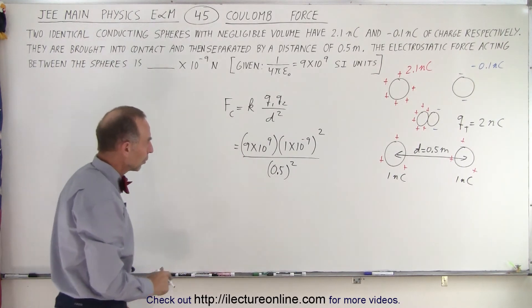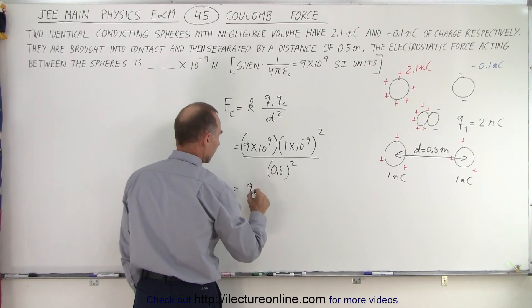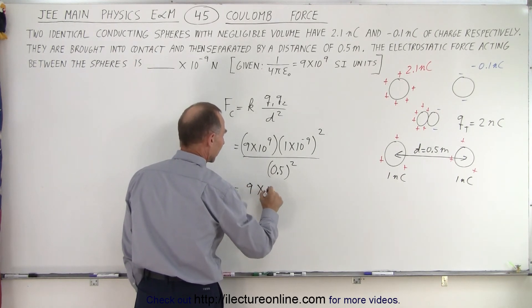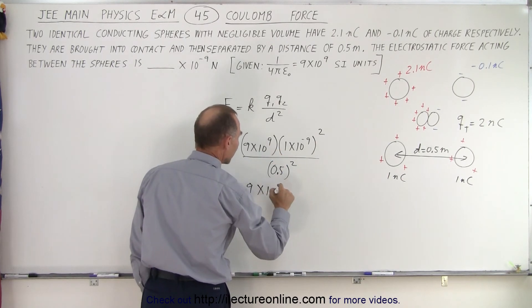This is equal to 9 times 10 to the... that's minus 18 plus 9, that's 10 to the minus 9, divided by 0.5 squared which is 0.25.